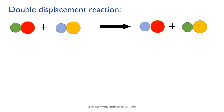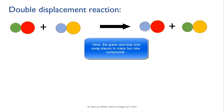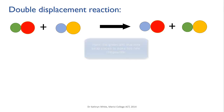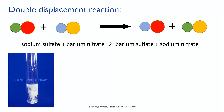The other kind of displacement is a double displacement reaction. In this reaction two ionic compounds, usually both dissolved in water, swap ions to produce two new compounds. If one of these new compounds is insoluble in water, it will precipitate out as a solid.